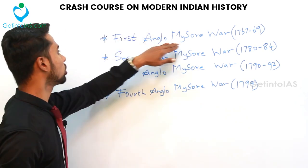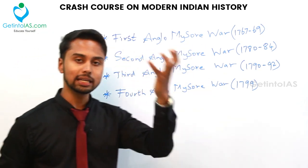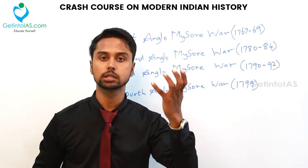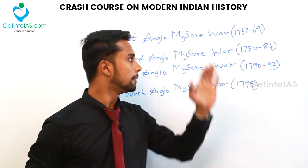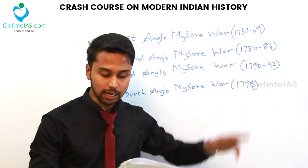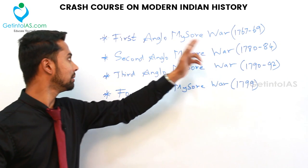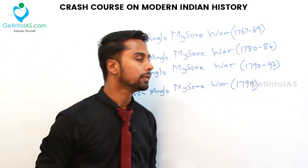In the First Anglo-Mysore War, Hyder Ali was victorious and a treaty was signed — the Treaty of Madras.